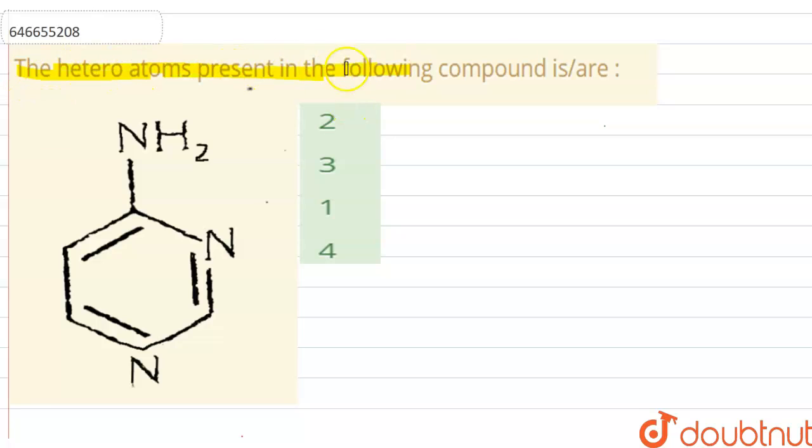The hetero atoms present in the following compound is called... Hetero atoms are the atoms which are different from carbon and hydrogen atoms in a compound. Atoms which are different from the carbon and hydrogen atoms, like oxygen, sulfur, nitrogen, chlorine.